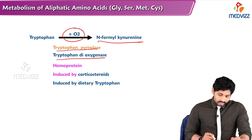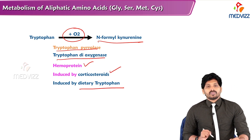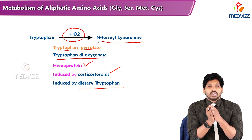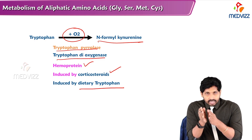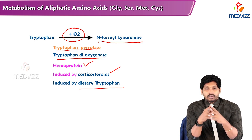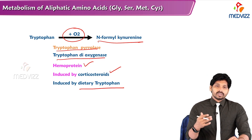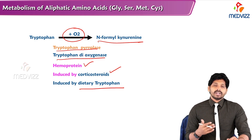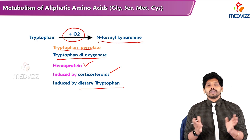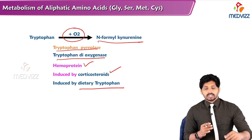For tryptophan to form N-formylkynurenine, a molecule of oxygen is required. The enzyme is tryptophan pyrrolase or tryptophan dioxygenase — it is a hemoprotein (you can give tryptophan pyrrolase as an example of a heme-containing protein). It is induced by corticosteroids and also induced by dietary tryptophan — when tryptophan is present in high quantities, genes start synthesizing this enzyme.